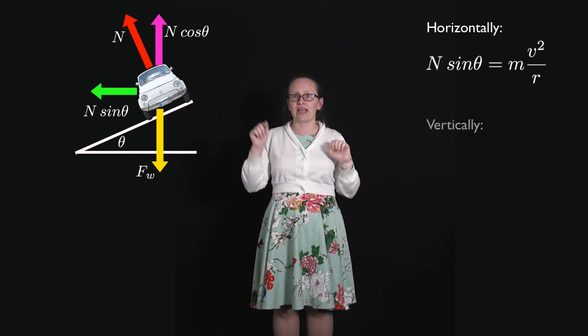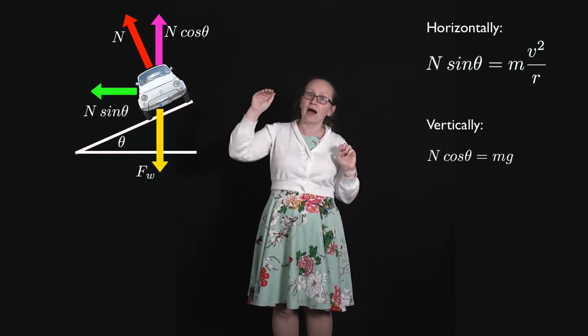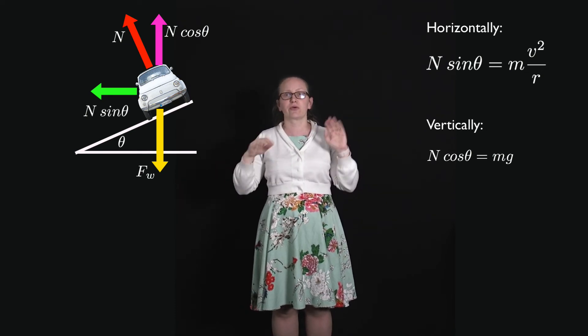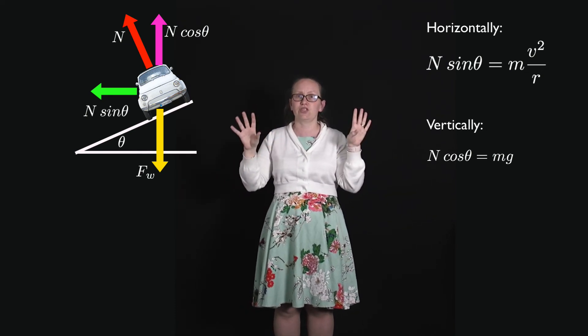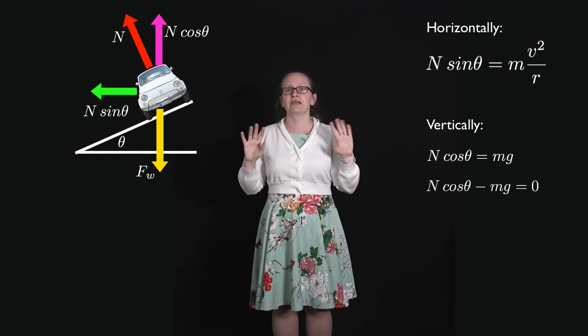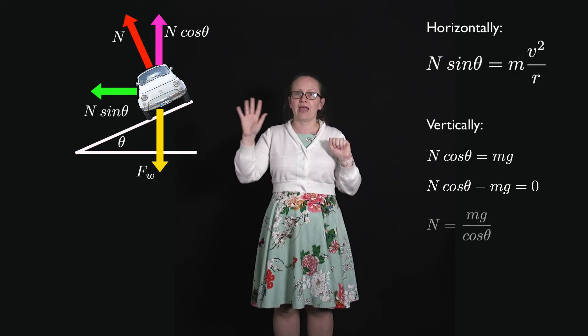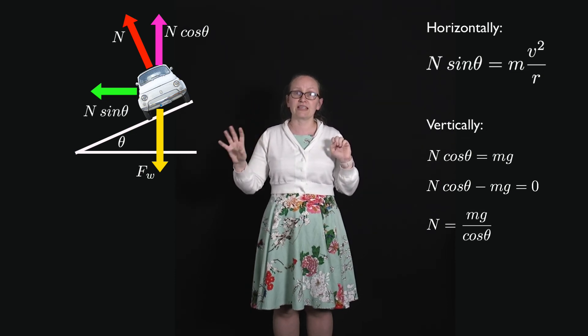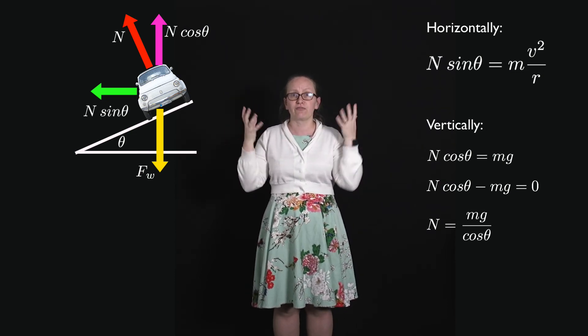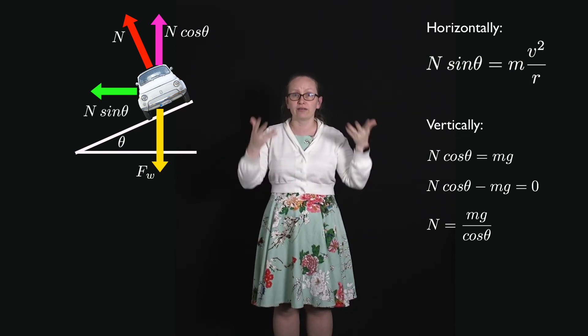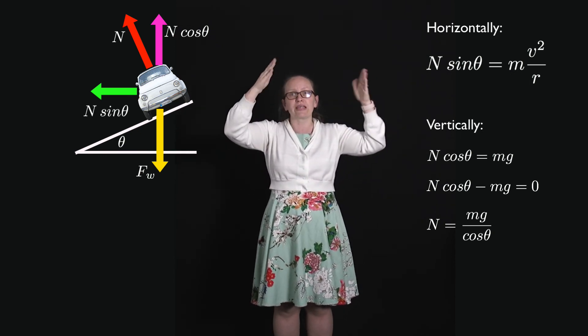Vertically we've got N cos θ going up and mg going down. So we know that N cos θ minus mg equals zero. We can rearrange this and we end up with N is equal to mg divided by cos θ. So we now have an expression for N and now we can substitute this back into our original horizontal equation.